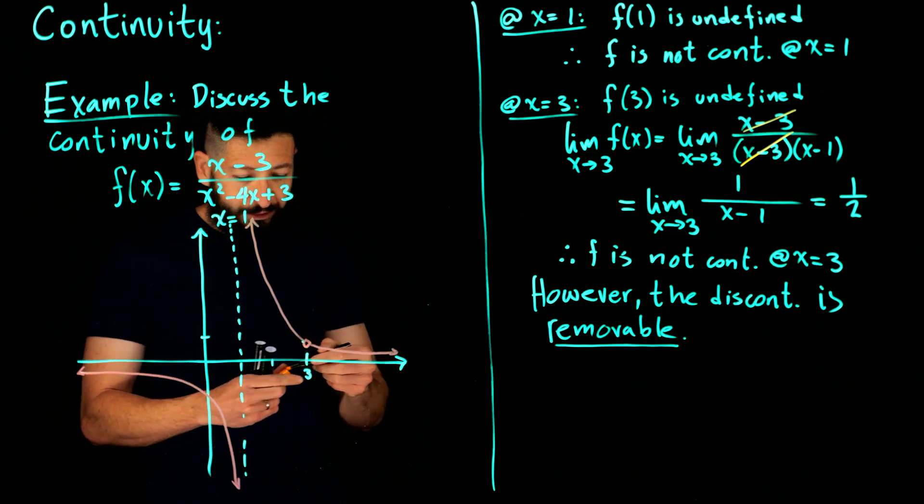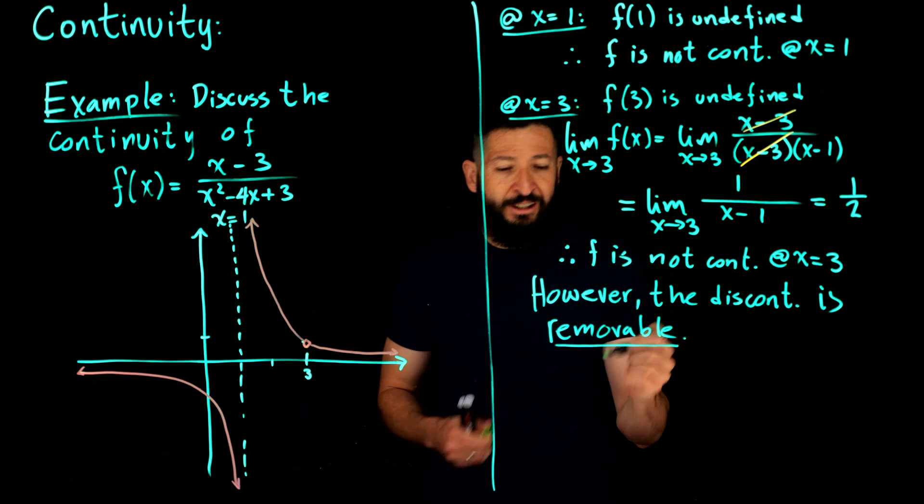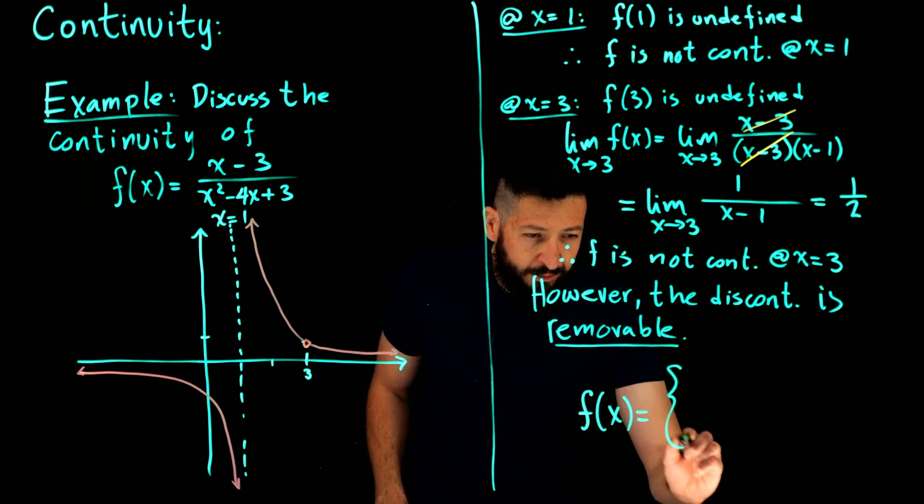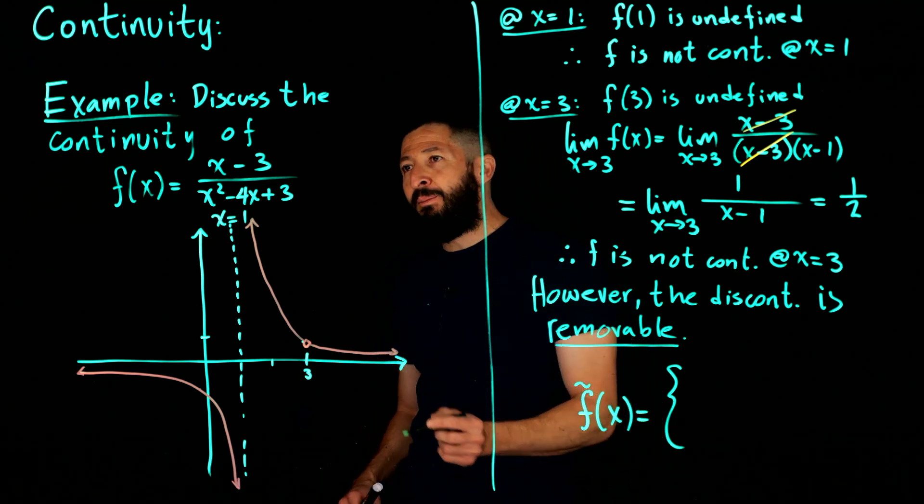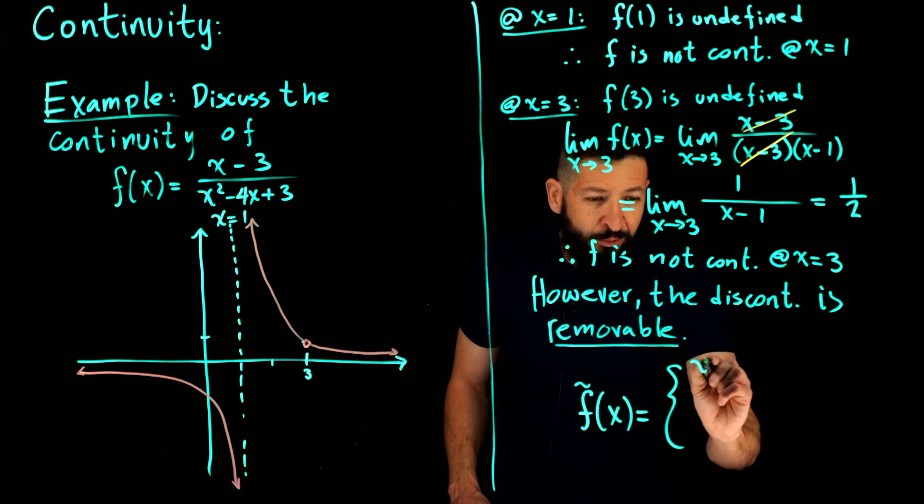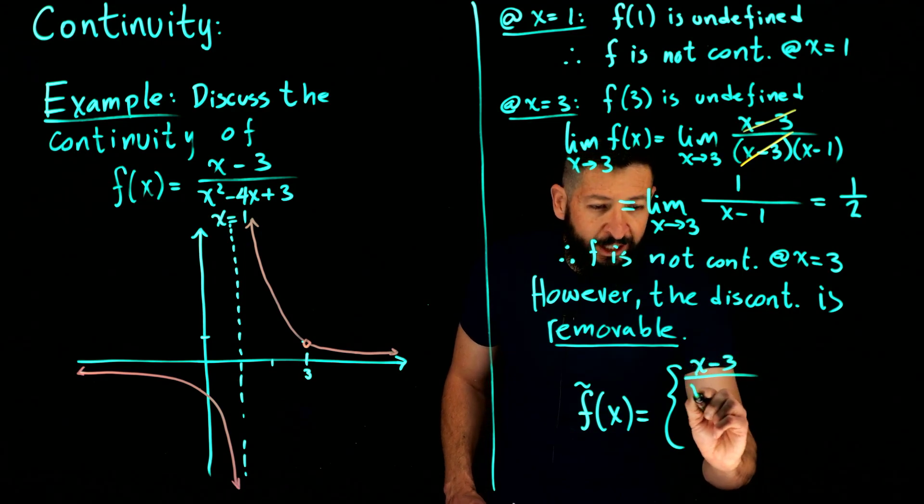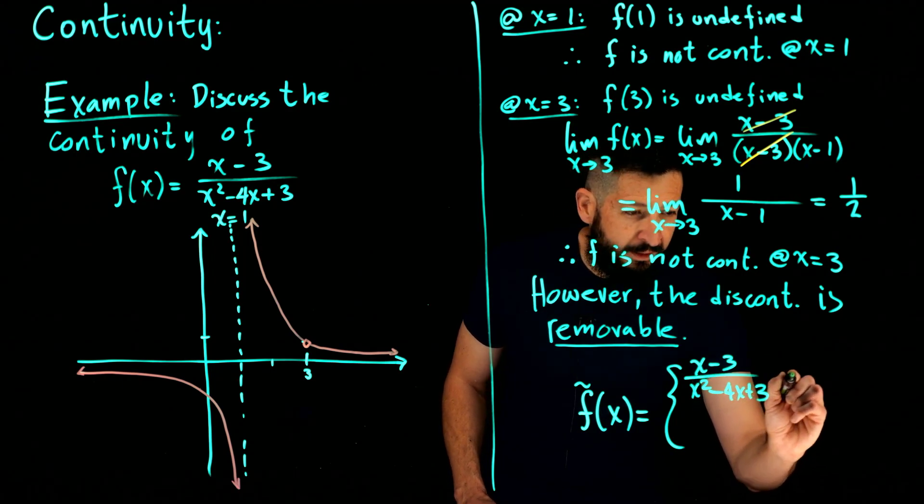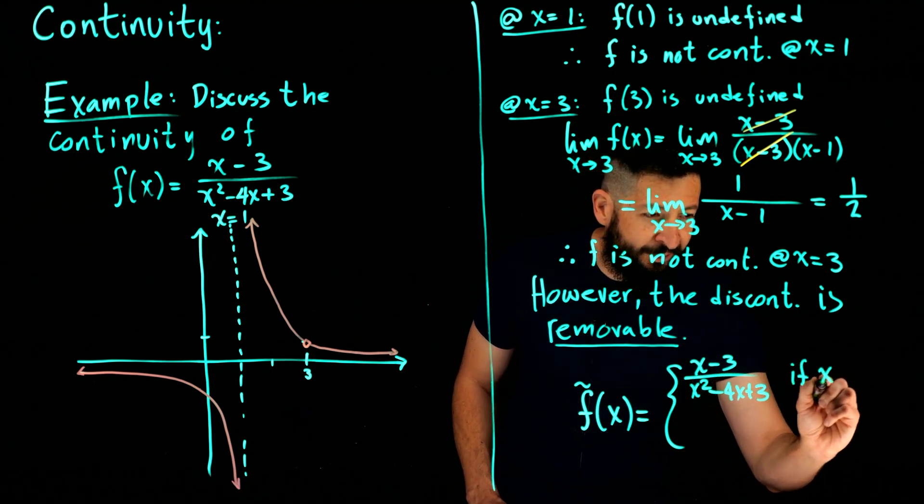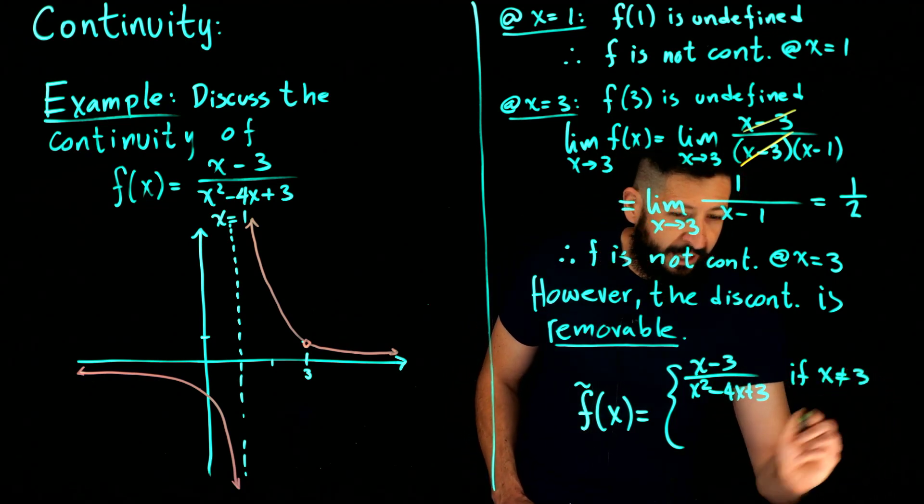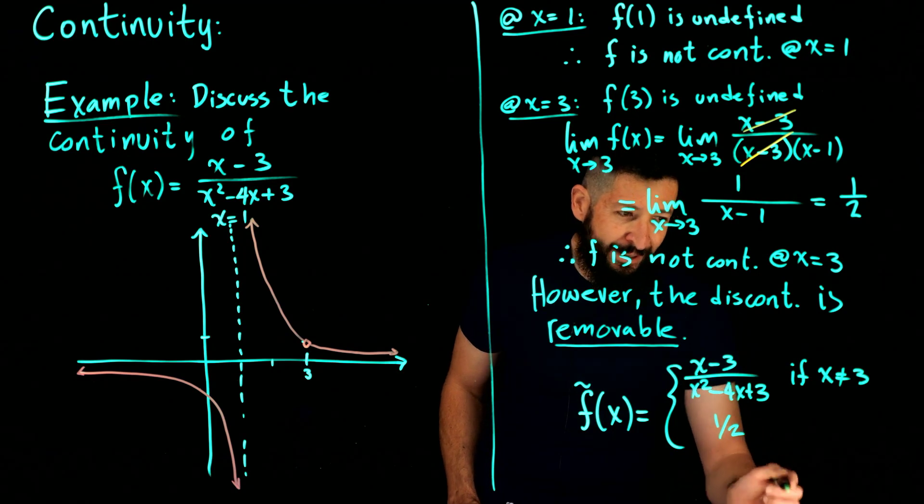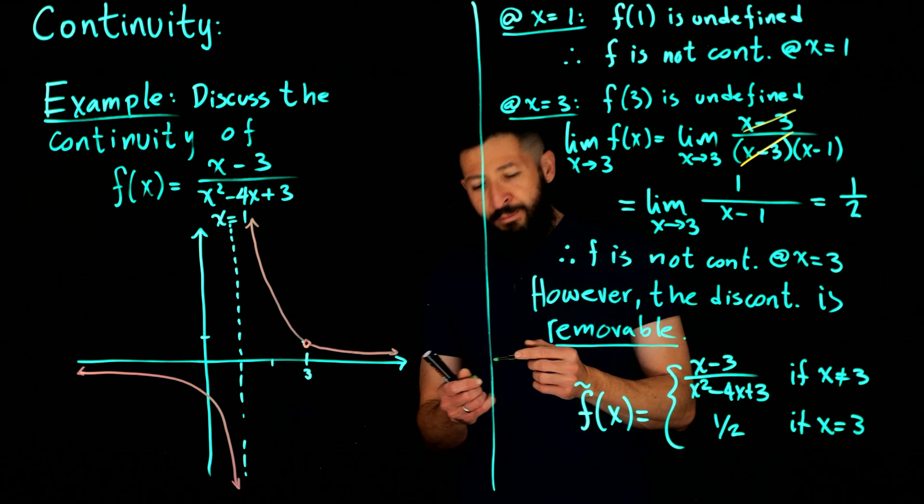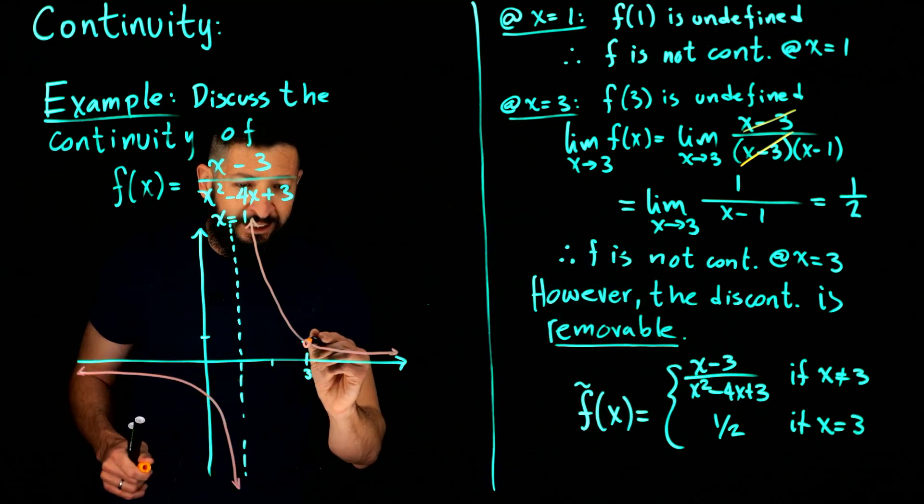You define the function to be f of x equal to, well, I guess I should call it f tilde or something, some other name. You could do it to be x minus 3 over x squared minus 4x plus 3 if x is not equal to 3. And then you could define it or force it to be 1 half if x is equal to 3.